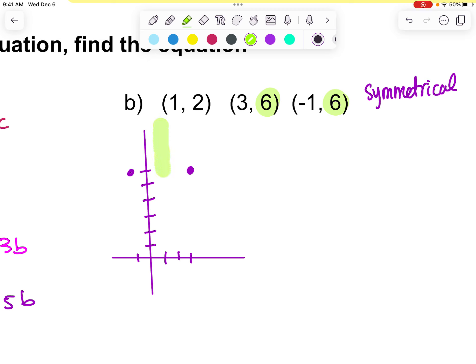So if I were to draw... Oh, that's a really fat axis of symmetry. Let's make that a little bit smaller. So if I were to draw this in, there's my axis of symmetry. I know that my vertex is going to be somewhere along that line of x equaling 1. Now, if I plot my other point, my 1, 2, that's right here.